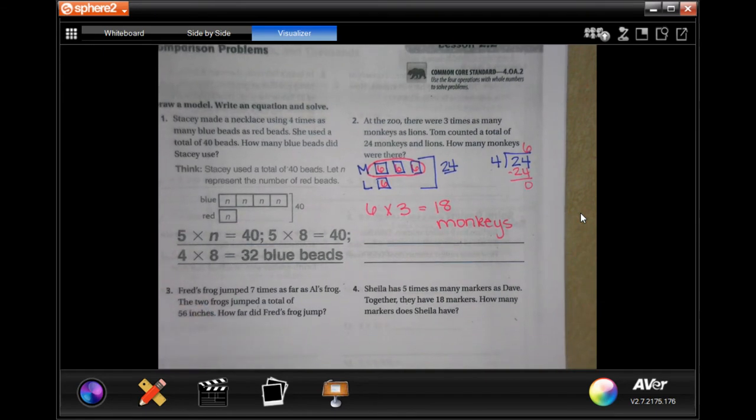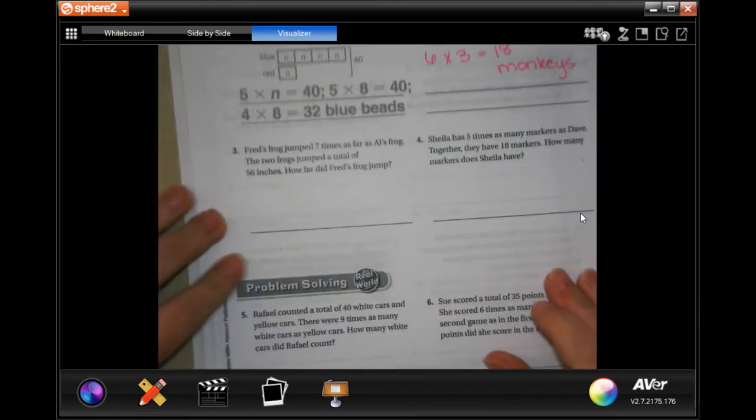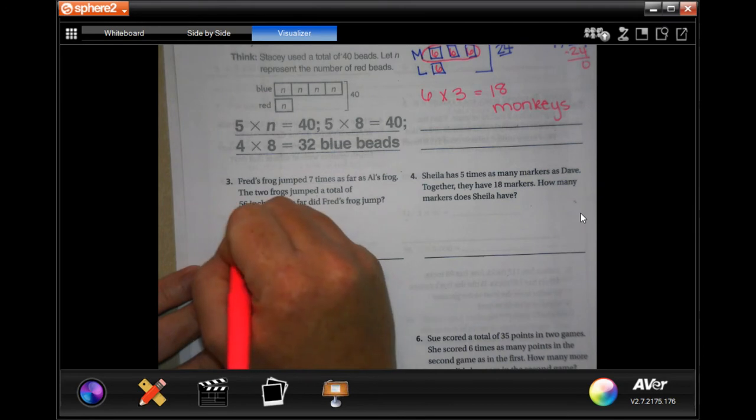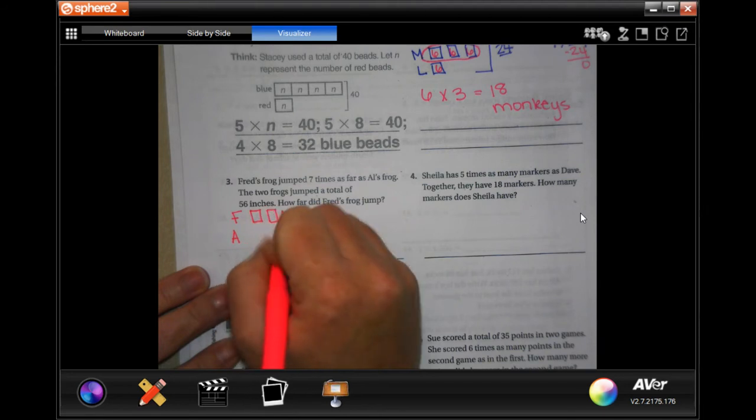We're gonna do number three. Fred's frog jumped seven times as far as Owl's frog. So Fred, Owl. Fred's frog seven times what Owl's frog did.